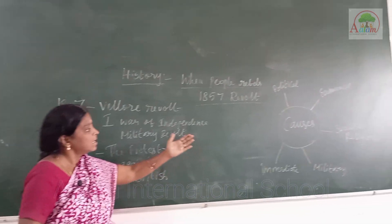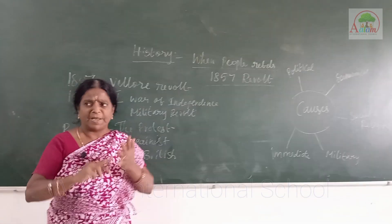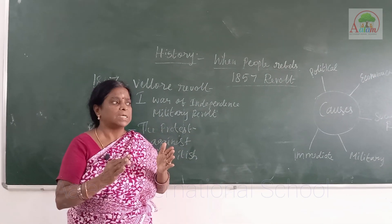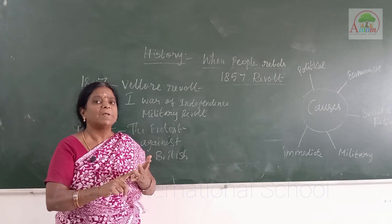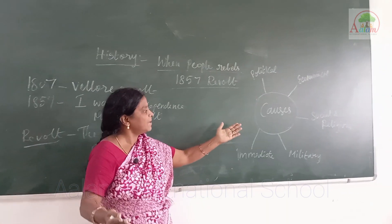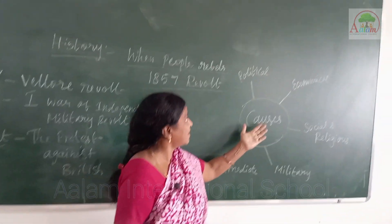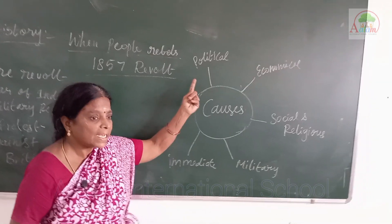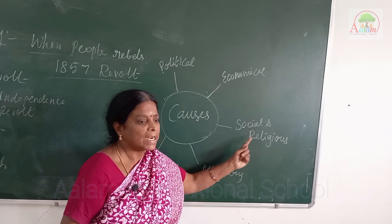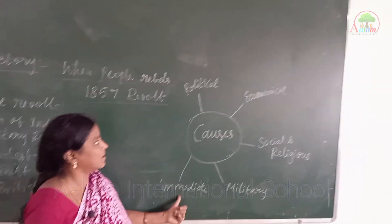Now we will go to the causes of the revolt. Children, whatever big incident happened, there should be important causes — even the First World War and Second World War have so many causes. Same thing, we have so many causes for the 1857 revolt. First, the political causes. Second, the economical causes. Third, social and religious causes. Fourth, the military causes. Fifth, the immediate cause.